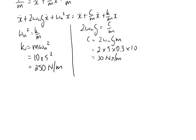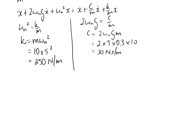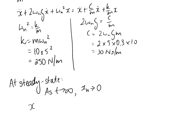Steady state occurs when time approaches infinity, because at that point the free vibration component — the homogeneous component — will have damped itself out to be almost non-existent. So at steady state, as T approaches infinity, XH approaches zero. If X equals the homogeneous part plus the particular part, and XH goes to zero, then X is just directly equal to XP. So for the steady state equation, we just need to determine what XP actually is.